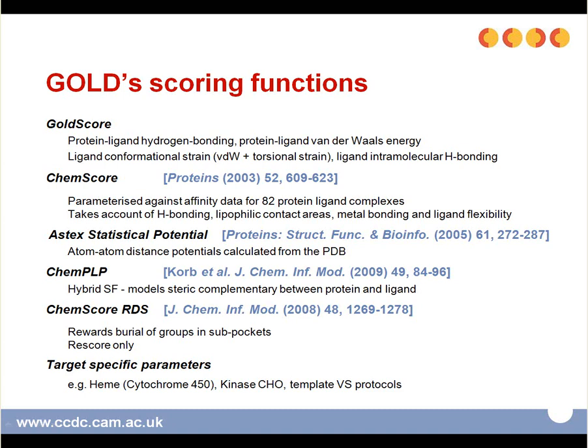ChemScoreRDS has also been found to be very useful when rescoring virtual screening runs. There are also target-specific parameters — for example, parameters developed for the heme group in cytochrome P450, but also for kinases, and there are template virtual screening protocols. Finally, you can define your own scoring functions using the GOLD scoring function API written in C or C++.